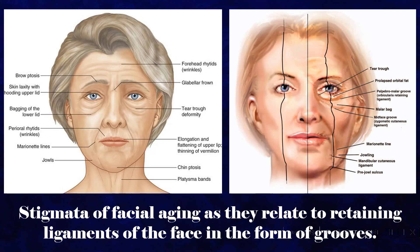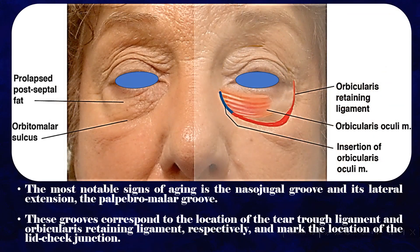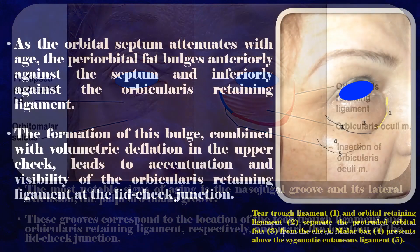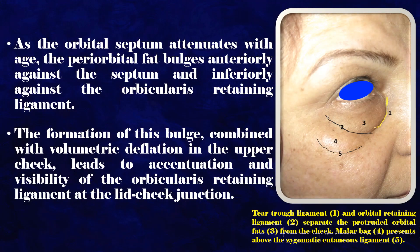Stigmata of facial aging as they relate to retaining ligaments of the face manifest as grooves. The most notable signs of aging are the nasolabial groove and its lateral extension, the palpebromalar groove. These grooves correspond to the location of the tear trough ligament and orbicularis retaining ligament, respectively, and mark the location of the lid-cheek junction. As the orbital septum attenuates with age, the periorbital fat bulges anteriorly against the septum and inferiorly against the orbicularis retaining ligament. The formation of this bulge, combined with volumetric deflation in the upper cheek, leads to accentuation and visibility of the orbicularis retaining ligament at the lid-cheek junction.